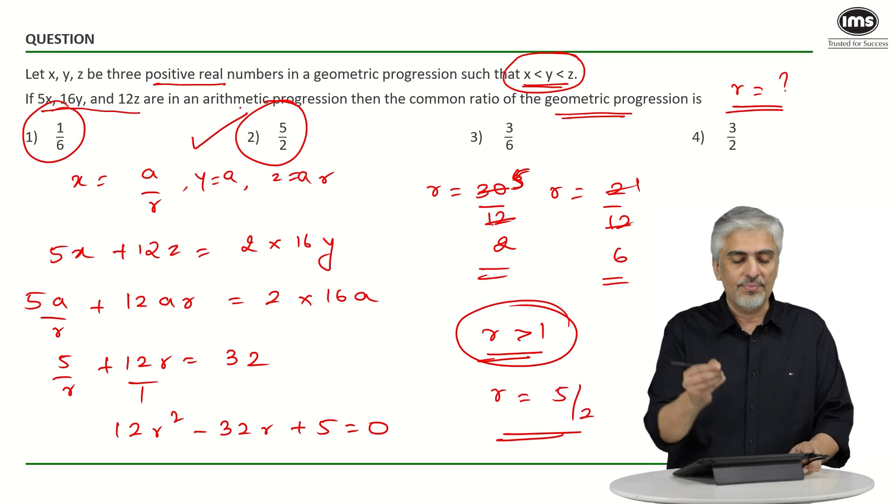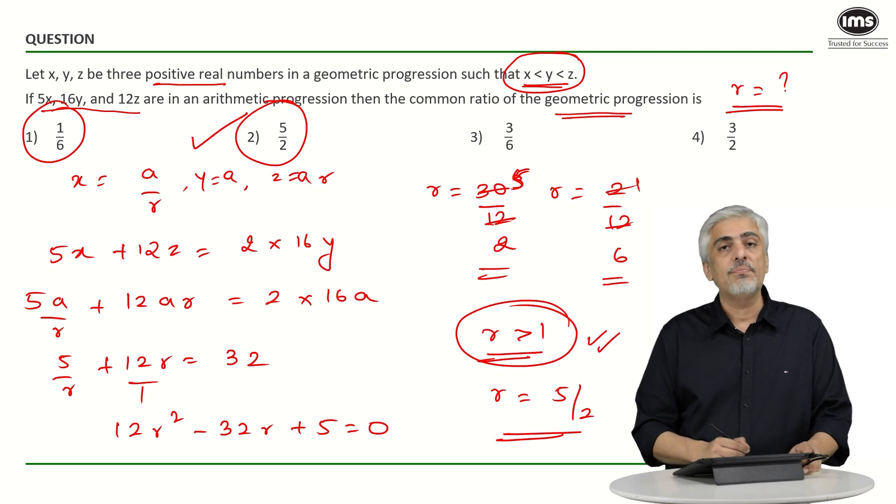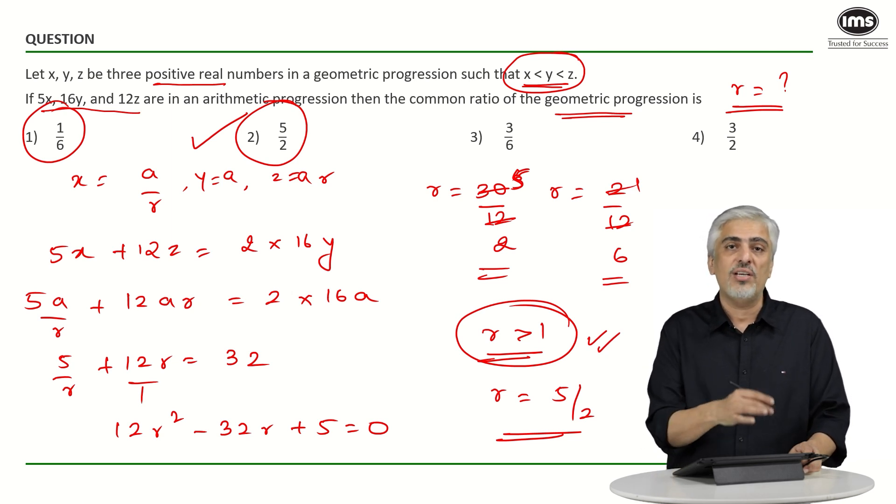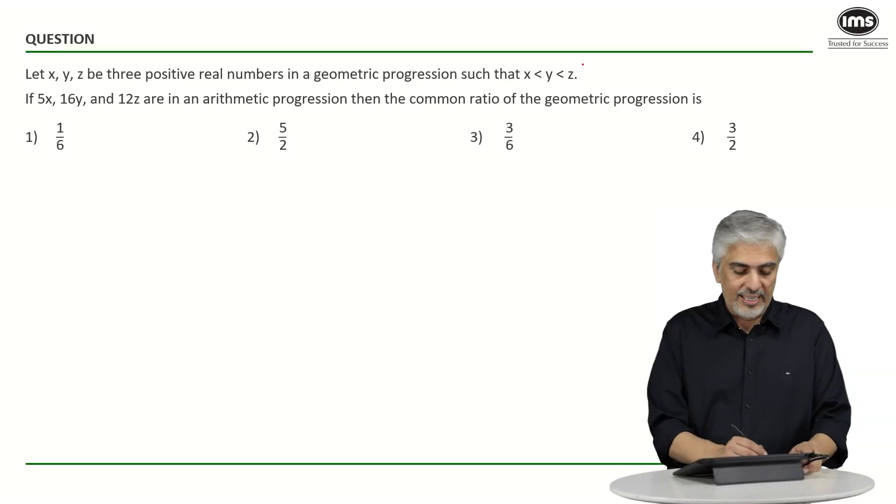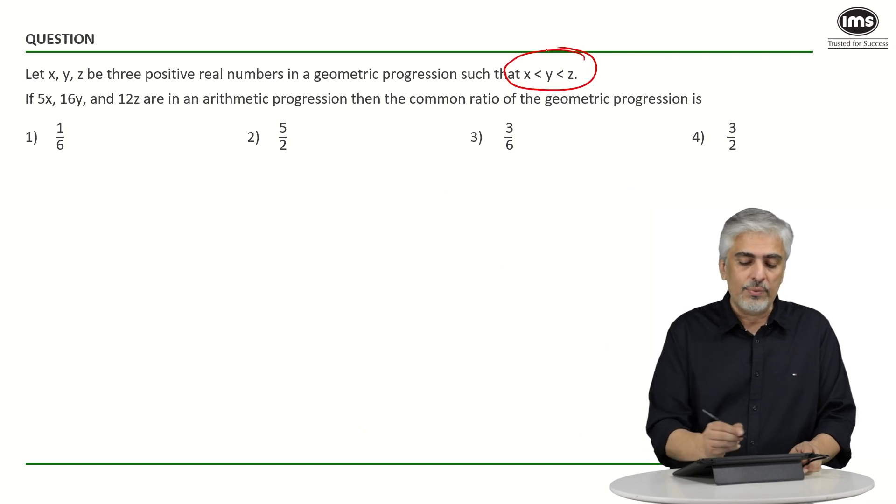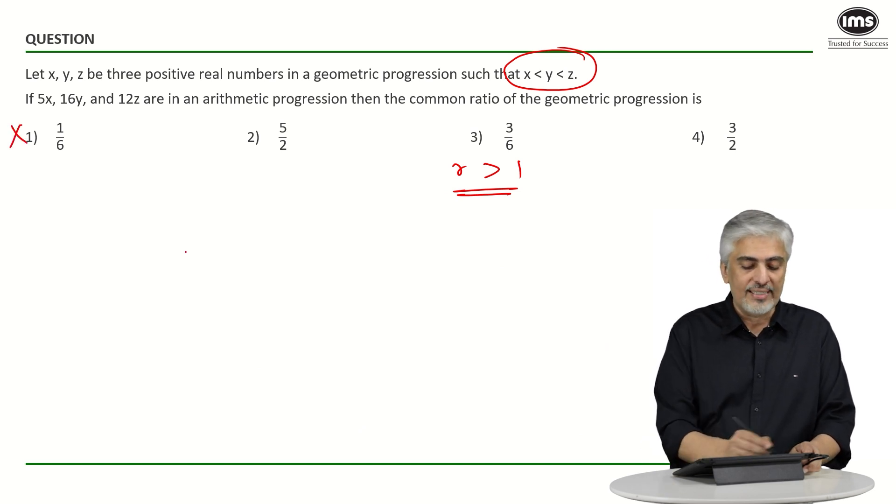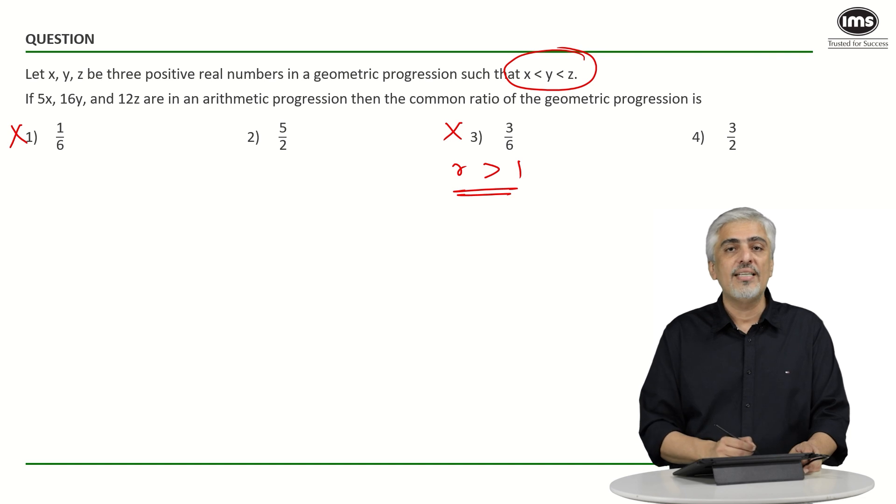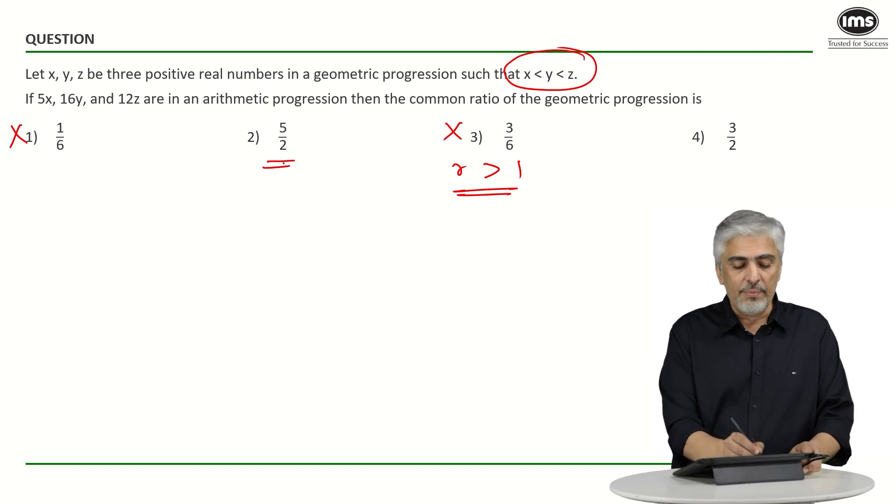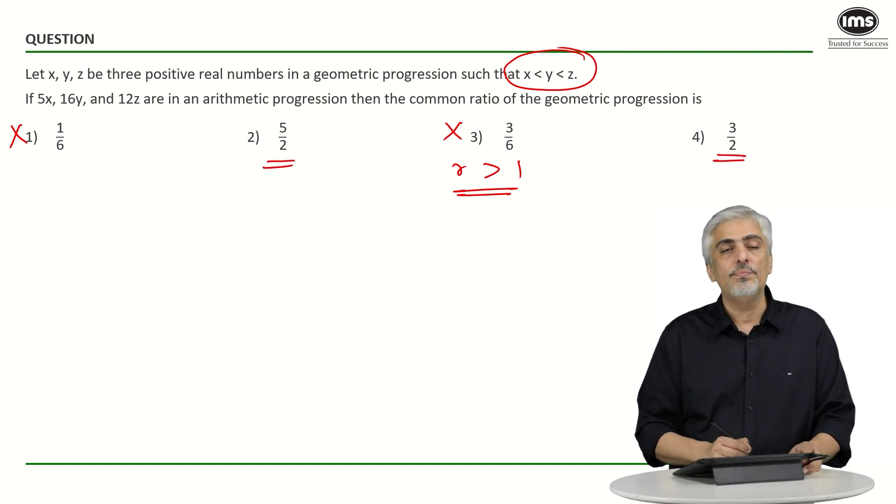From here comes my next method. Let's have a look at the second approach for which I thought this question could have been solved very smartly. Since I know that x is less than y is less than z and I know r has to be greater than 1, two options are eliminated immediately: 1 by 6 is eliminated, 3 by 6 is eliminated. Two options are directly gone.